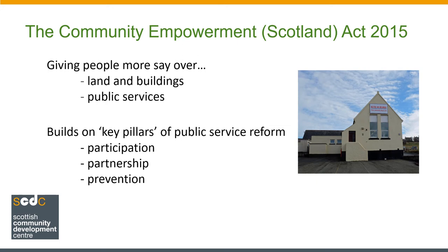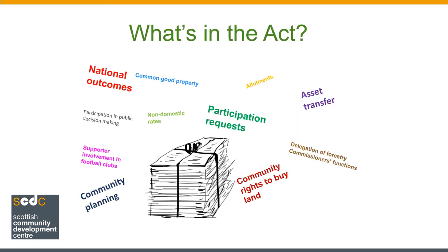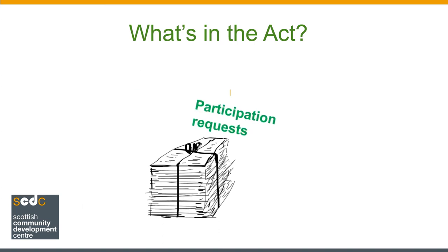For instance, providing young people with activities can reduce antisocial behaviour. There's quite a lot in the Community Empowerment Act, with 11 parts in total, ranging from asset transfer requests — which tries to make it easier for community groups to take over publicly owned land and buildings — to a section on allotments, which requires local authorities to do more to meet the demand for allotments and community growing spaces. We'll show you where you can find out more about the different parts of the Act at the end of this presentation. But for now, let's return to participation requests and give you the basics.